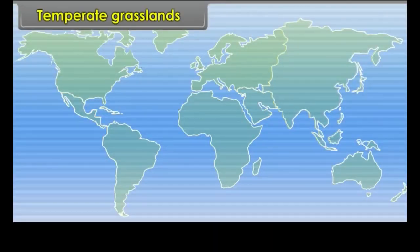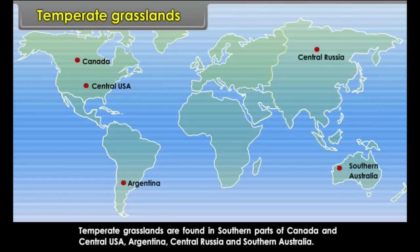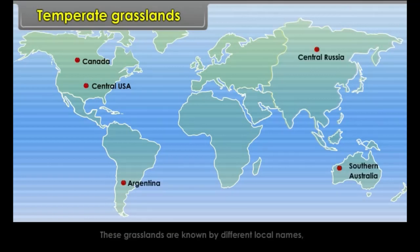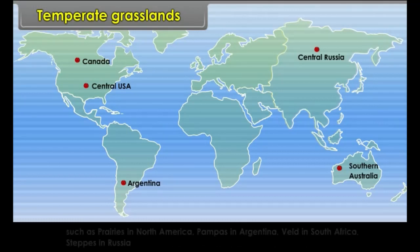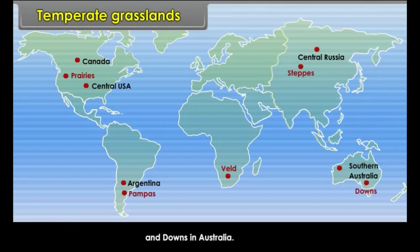Temperate Grasslands are found in southern parts of Canada and Central USA, Argentina, Central Russia and Southern Australia. These grasslands are known by different local names: Prairies in North America, Pampas in Argentina, Veld in South Africa, Steppes in Russia and Downs in Australia.